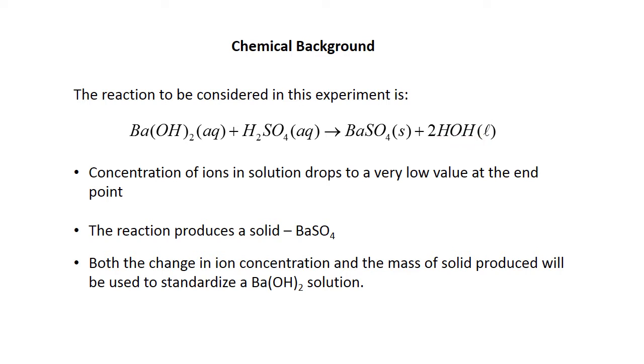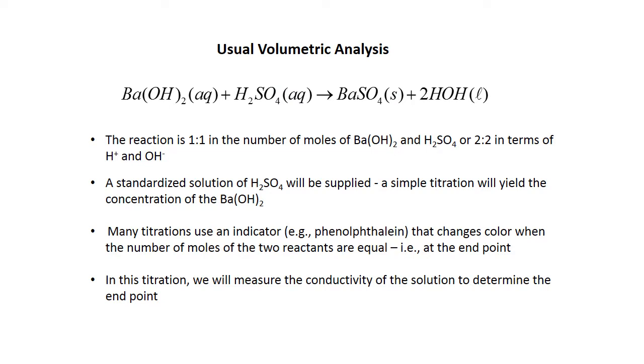So what will happen as this reaction gets toward its endpoint, where I have the same number of moles of barium hydroxide and sulfuric acid, is I'll end up with very few ions in the solution. Since these react in a one-to-one ratio, or if you think about the hydrogens and hydroxides they react in a two-to-two, which is the same as one-to-one.